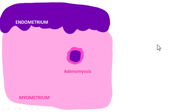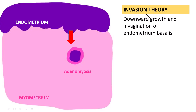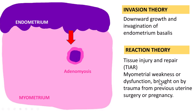Now, what is the pathogenesis of adenomyosis? There are various theories proposed. The first and foremost is the invasion theory, where there is downward growth and invagination of the endometrial basalis into the myometrium.